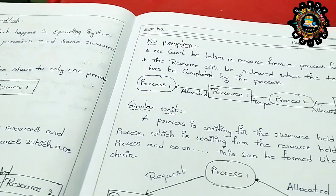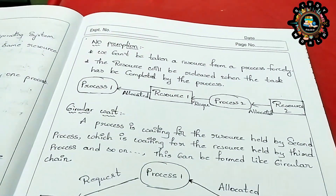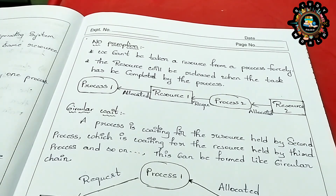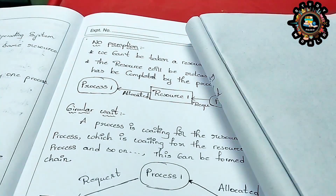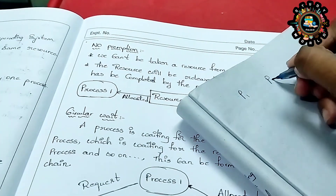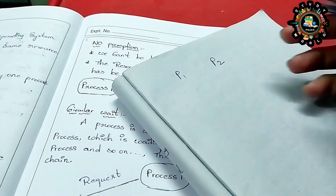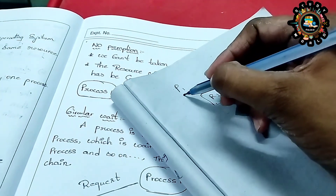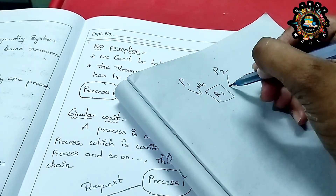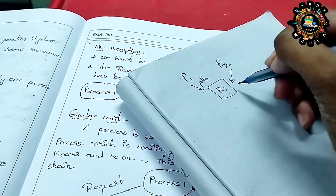Next is No Preemption — no permission to forcefully take a resource. Here is the total: there is P1 and P2, two processes, and there is one resource. For this resource, you don't need to forcefully take the resource from a process.